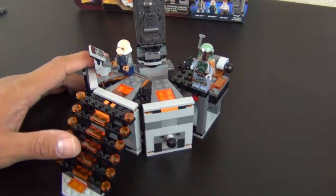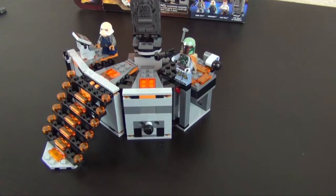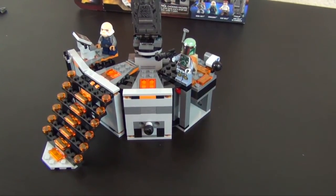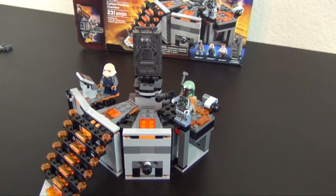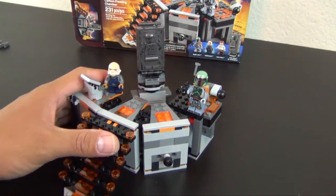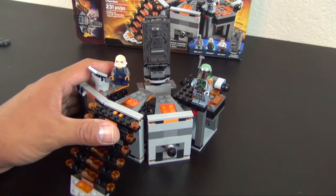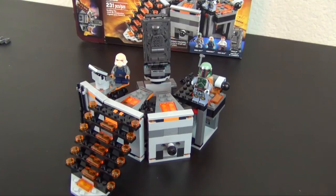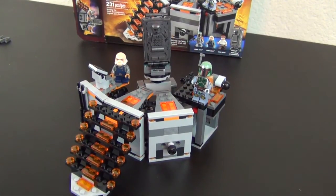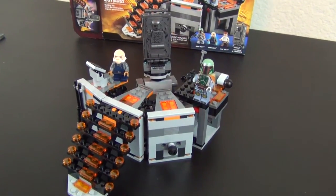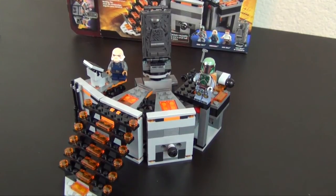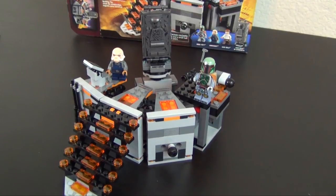But that more or less completes the build of it. It's kind of small. It's not a big freezing chamber. But it does have the play features needed to kind of make it a fun little set. You do get three minifigures plus a Han Solo frozen carbonite. And yeah, it's a little half chamber. So, thanks for watching. Check out my other videos. You know the routine. We'll see you tomorrow.